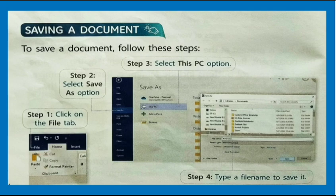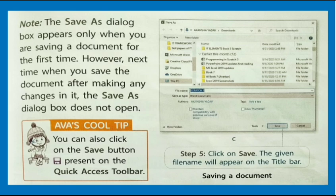Saving a document: to save a document, follow these steps. Step 1: click on the File Tab. Step 2: select the Save As option. Step 3: select This PC option. Step 4: type a file name to save it. Note: the Save As dialog box appears only when you are saving a document for the first time; next time, when you save after making changes, the Save As dialog box does not open. Step 5: click on Save — the given file name will appear on the Title Bar. Tip: you can also click on the Save button on the Quick Access Toolbar.